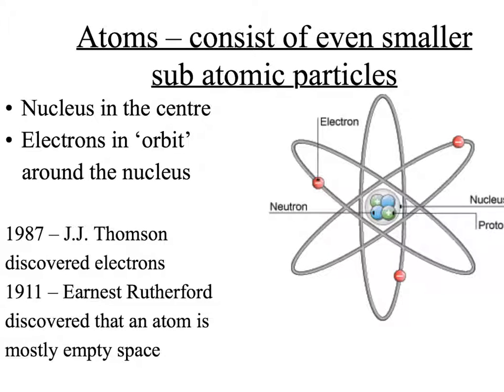It was later discovered that atoms consist of even smaller subatomic particles. They have a nucleus in the center of the atom, and electrons that are in a kind of orbit around the nucleus, although this is not technically true.